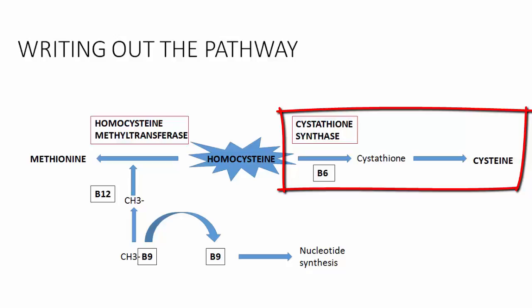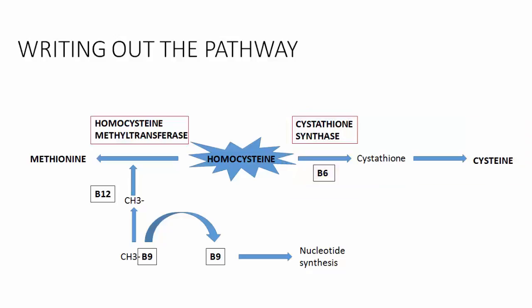The first step in this pathway is going from homocysteine to cystathionine using the enzyme cystathionine synthase. This enzyme requires vitamin B6 to work as a cofactor, and if B6 is deficient, this pathway towards cysteine won't work as efficiently. The next step is going from cystathionine to cysteine through enzymes that aren't important to memorize for your Step 1 exam.